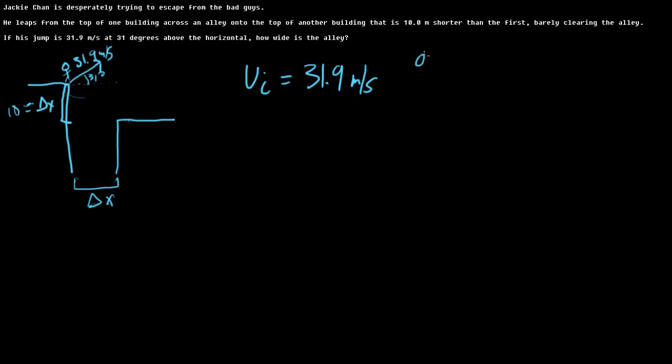We also happen to know ay, acceleration in the y direction, negative 9.8 meters per second squared. We know delta y, which is negative 10, because it's a distance down. I should make that negative over here too.